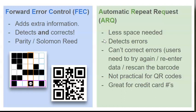The other kind of error control is Automatic Repeat Request, or ARQ. The good thing about ARQ is it takes less space than FEC, and it does detect errors. The less good thing is that it can't correct the errors, so users will need to re-enter data or re-scan a barcode. This is useful if you've put in your credit card information wrong, but not practical if you're hoping that a QR code is going to work even if it does have some damage.